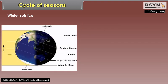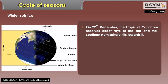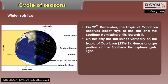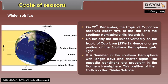Winter Solstice. On 22nd December, the Tropic of Capricorn receives direct rays of the sun and the Southern Hemisphere tilts towards it. On this day, the sun shines vertically on the Tropic of Capricorn, 23 and a half degrees South. Hence, a larger portion of the Southern Hemisphere gets light. It is summer in the Southern Hemisphere with longer days and shorter nights. The opposite conditions are prevalent in the Northern Hemisphere. This position of the earth is called winter solstice.